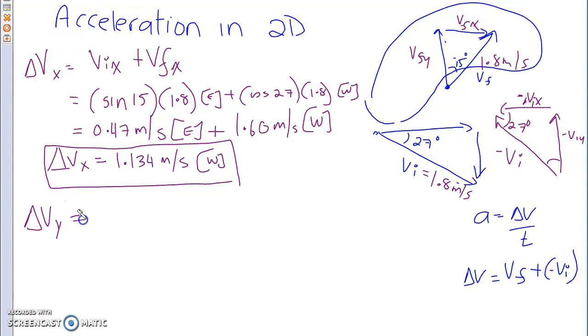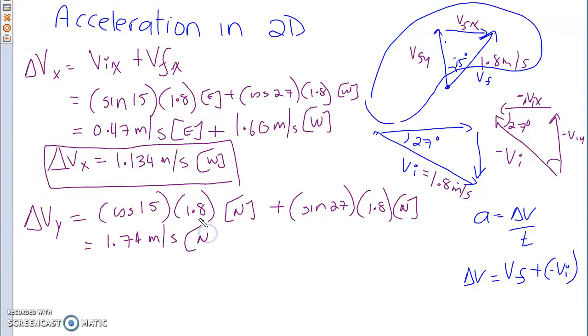Now we're gonna do the same thing for delta VY, and you end up with cos of 15 times 1.8. And this is going north, plus sin of 27 times 1.8, and this is going also north. So you end up with 1.74 meters per second. That is going north, plus 0.82, and that is also going north.